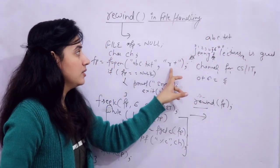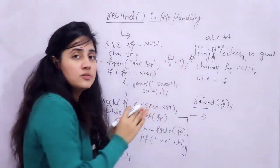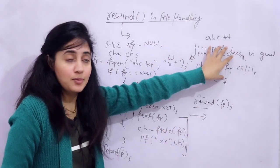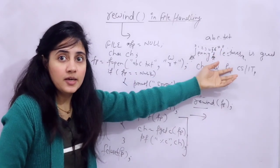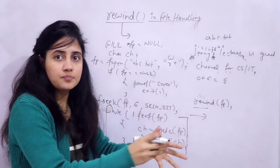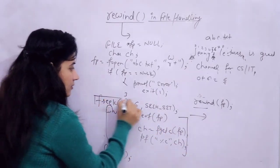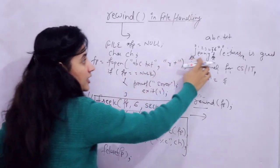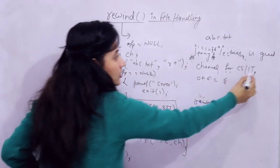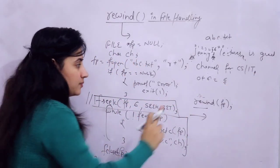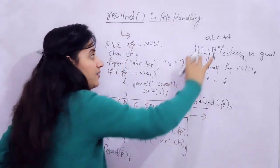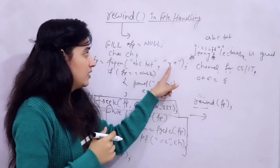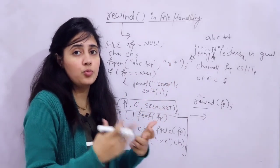You can use rewind with w+, r+, or a+ modes. Note that in w+ mode the previous file content is erased, so first write something to the file before reading. You can combine fseek and rewind as needed. For example, in r+ mode, after reading through the file once the cursor is at the end. Use rewind(fp) and write the reading logic again — it will print the complete content a second time, like 'Jenny's lectures is a good channel for CS and IT'.